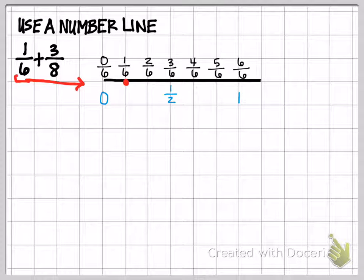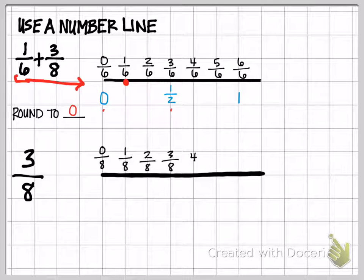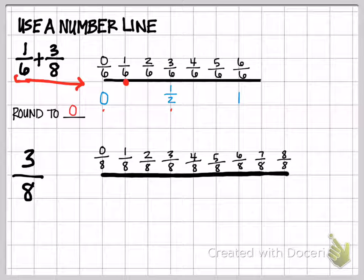So now that I have my benchmarks in, I'm going to identify where 1/6 would fall on this number line. I've indicated that with a red dot. So now I need to determine is 1/6 closer to 0 or is it closer to 1 half? The answer is that it is closer to 0. So I round that to 0.